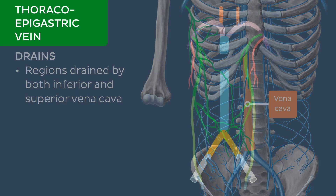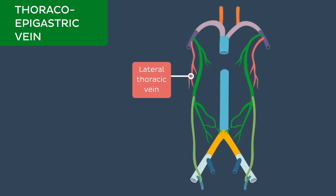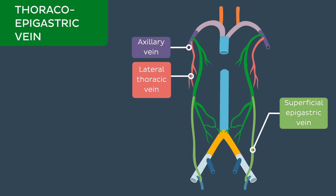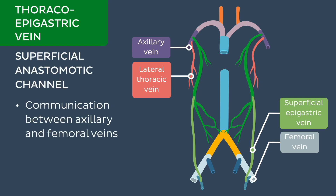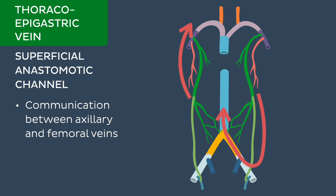As we saw a moment ago, the lateral thoracic vein is a tributary of the axillary vein and the superficial epigastric vein is a tributary of the femoral vein. So the thoracoepigastric vein is a relatively direct superficial anastomotic channel that establishes important communication between the axillary vein — a tributary of the superior vena cava — and the femoral vein, a tributary of the inferior vena cava. It therefore also plays a role in draining regions of the abdominal wall by connecting regions drained by both the inferior and superior vena cava.